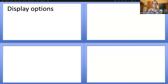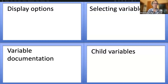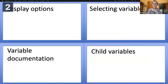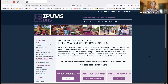We're going to start with tips for constructing your IPUMS DHS dataset. We'll cover display options, selecting variables, variable documentation, and the special case of child variables. Now I'm going to switch to the website. Here we are at the IPUMS DHS website. We're going to start by logging in — you log in with your DHS username and password. You can proceed as a guest and see all the documentation, but you won't be able to download a dataset until you log in.